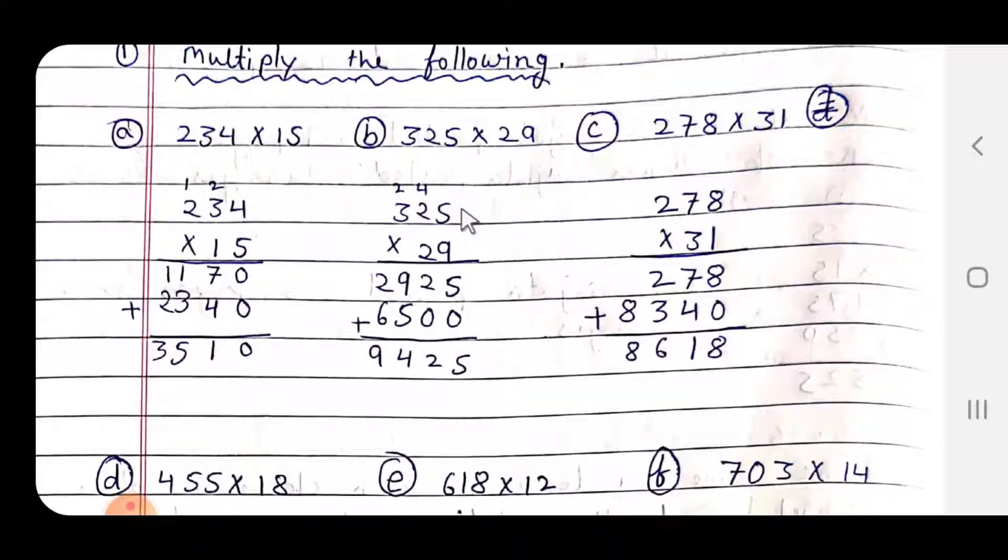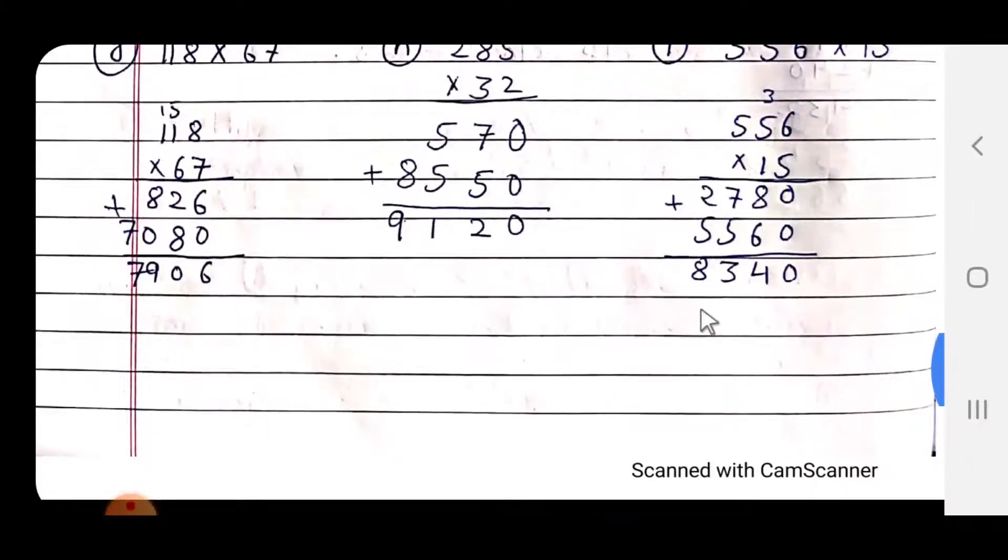Then you will fill it in the textbook. 3 x 25 = 29, 9425, 278 x 31 = 8618. You have to do this yourself.